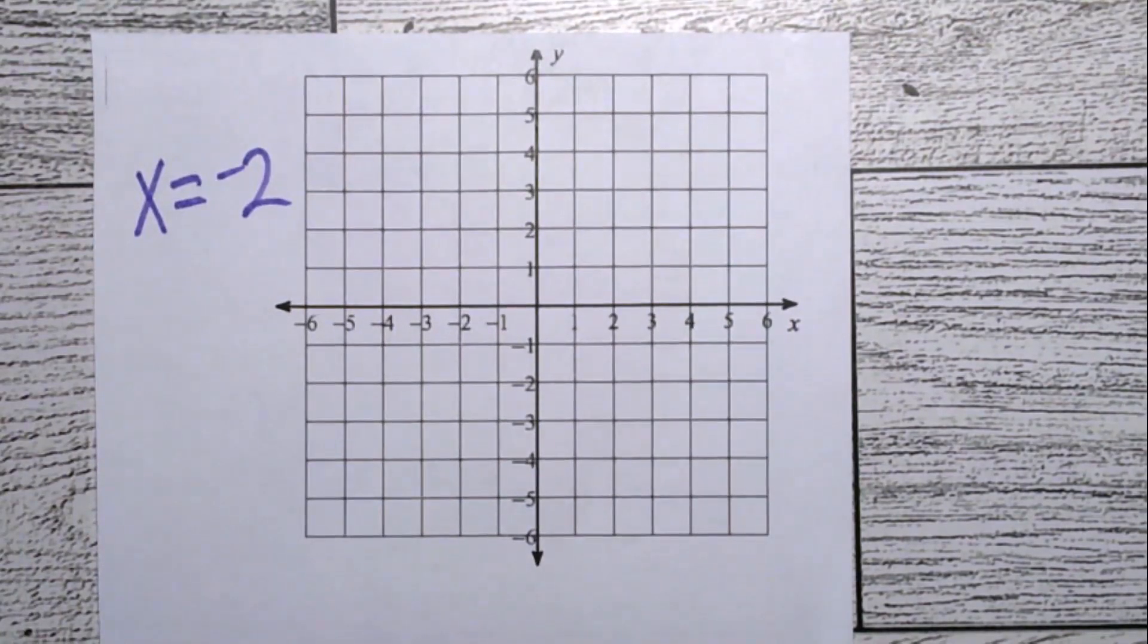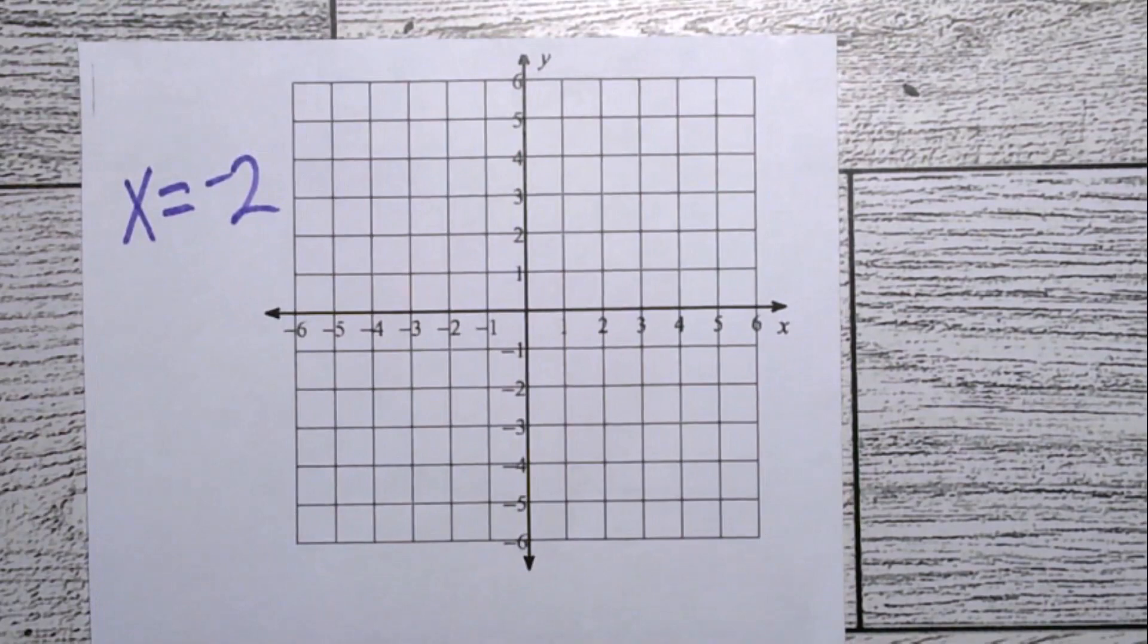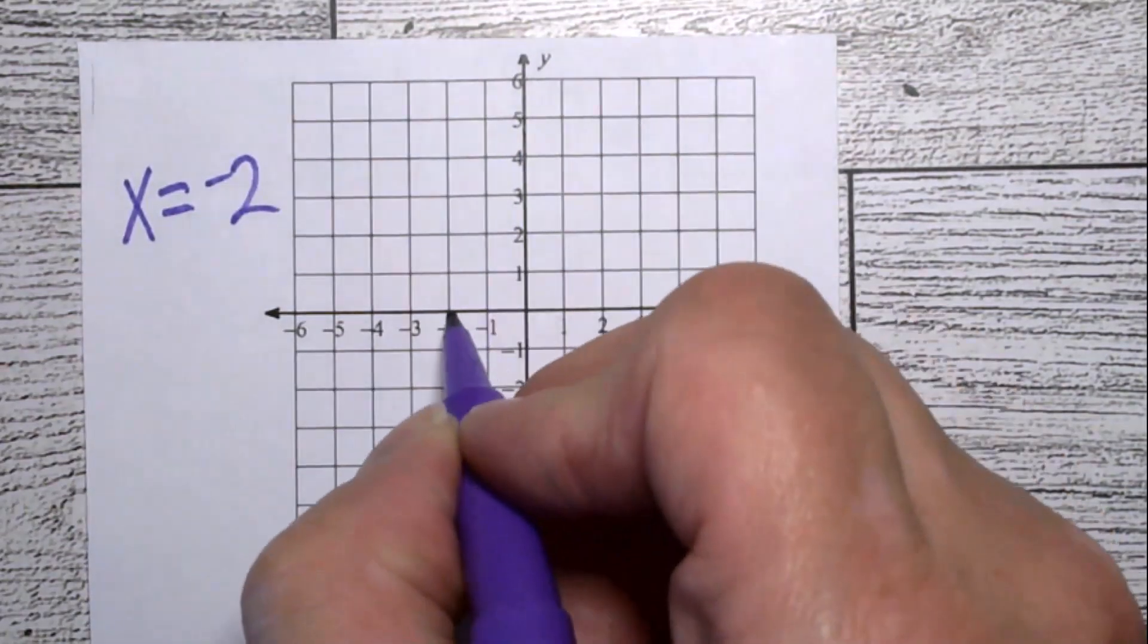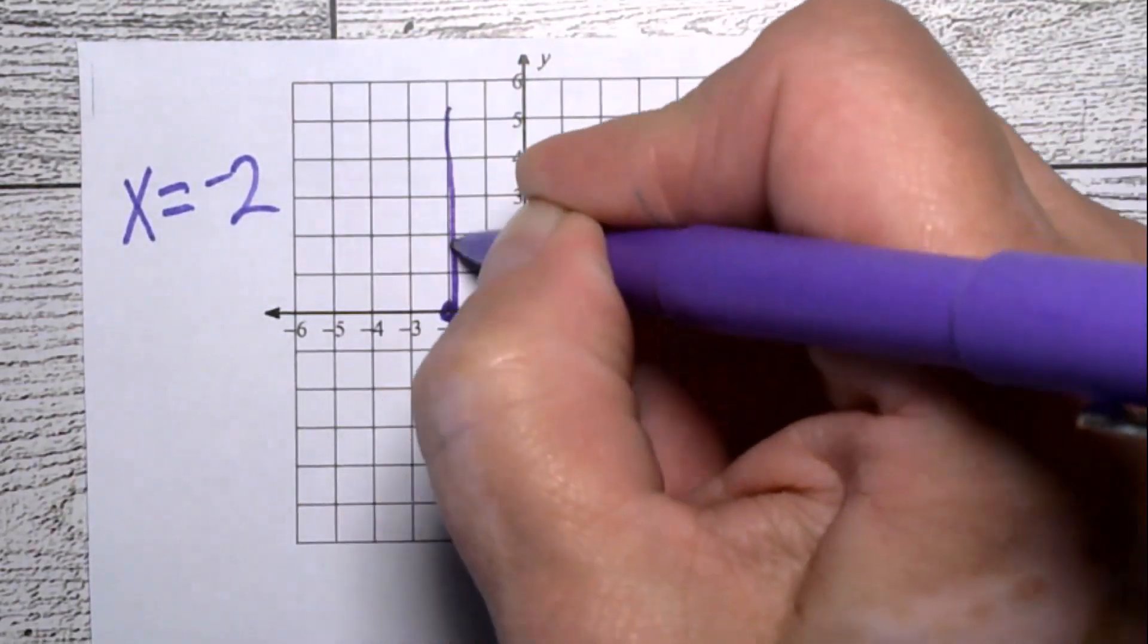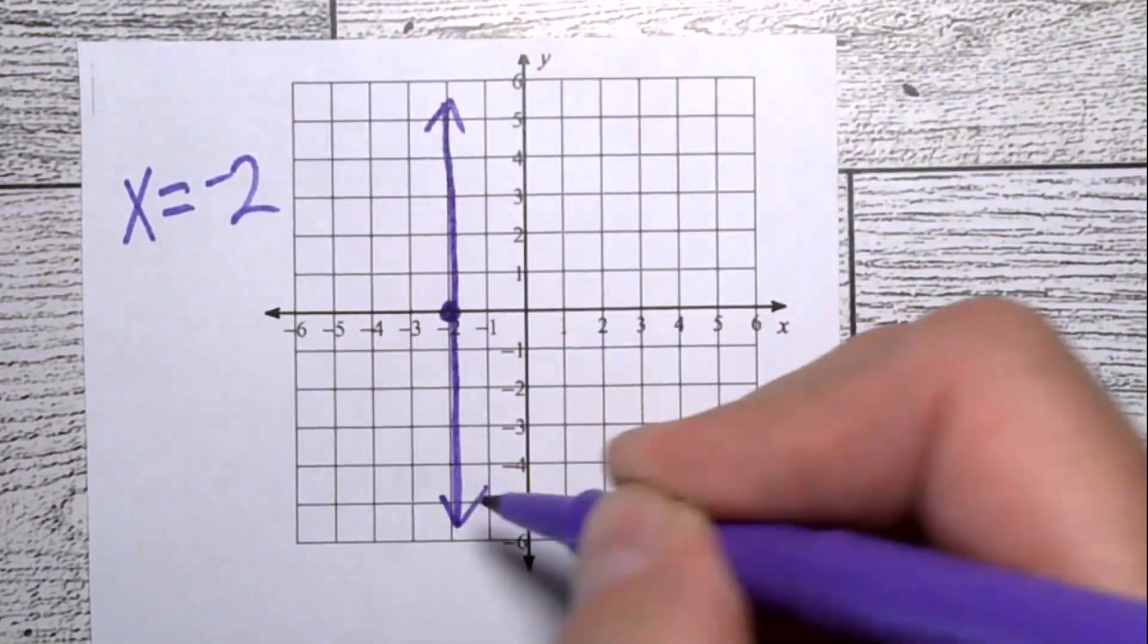x equals negative 2. We did y equals negative 2 a second ago. But where x equals negative 2. That's the intercept. It is a straight up and down line where all the values of x are negative 2. The y's can change.